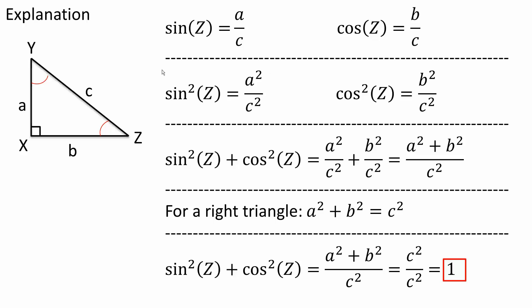Now if I square the sine expression I need to square both sides, and similarly for cosine. So I get sine squared Z is equal to A squared divided by C squared, and cosine squared Z is equal to B squared divided by C squared.